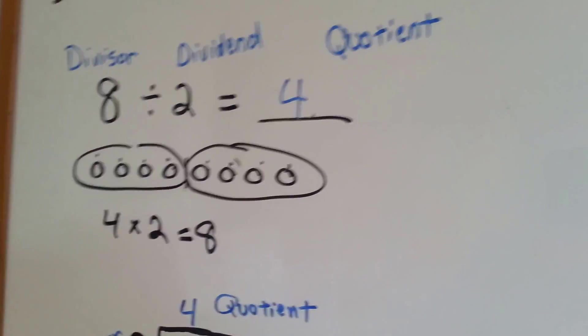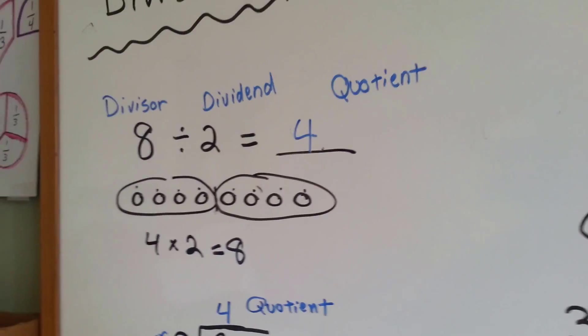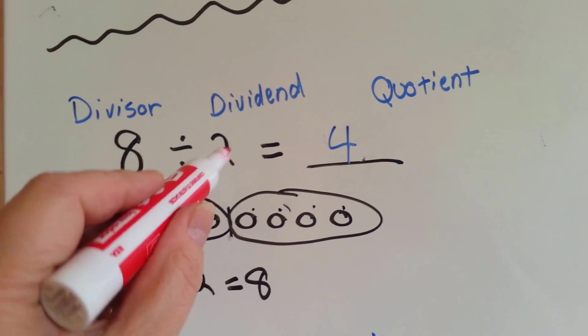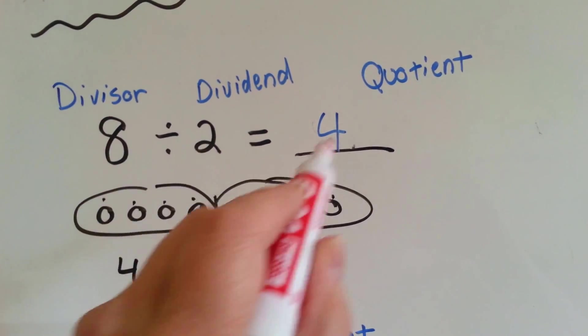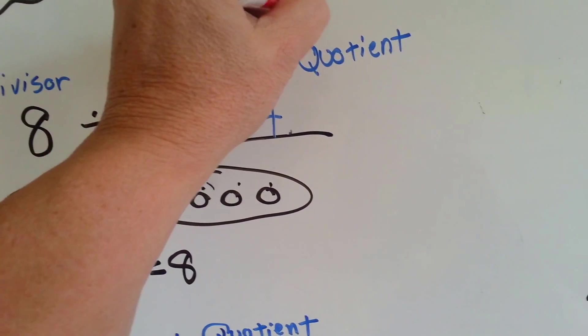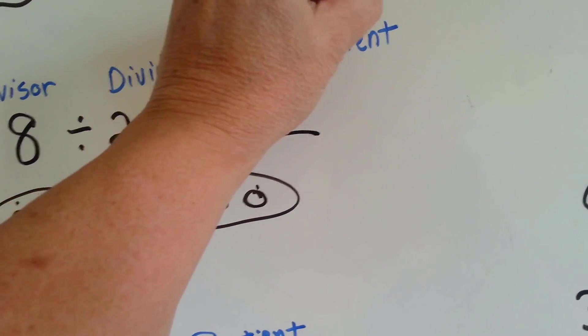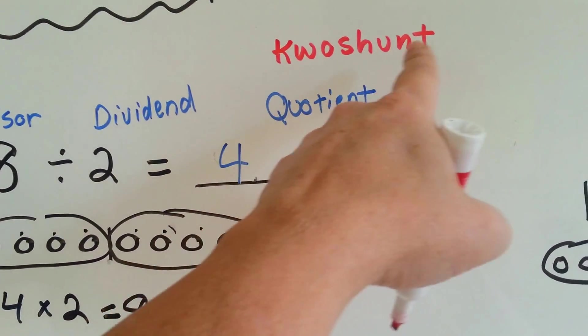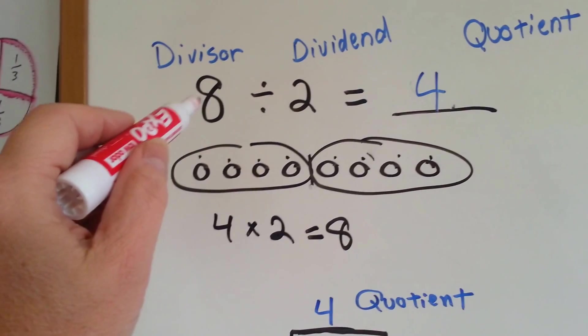So let's take a look at this. Here's the parts of a division problem. The big number is the divisor. The little number is the dividend. And the answer is the quotient. It's like quotient.